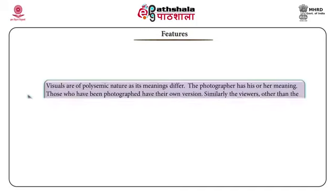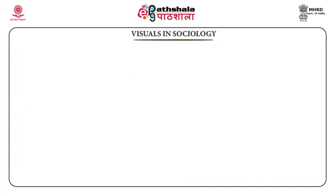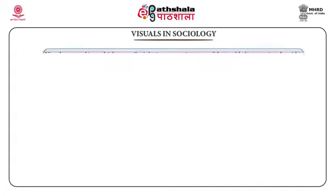Visuals are of a polysemic nature — their meanings differ. The photographer has his or her own meaning; those who have been photographed have their own version; and viewers other than the photographer and photographed subjects may have quite different takes on the event. All these interpretations are subject to change over time and in different contexts, and there is no question of primacy of one particular meaning over another. Visuals are used in multiple ways in sociology.